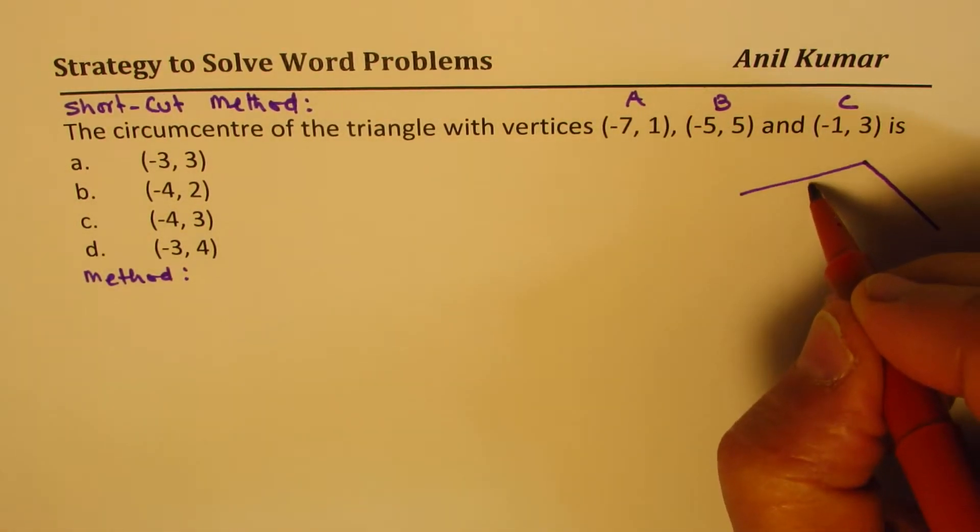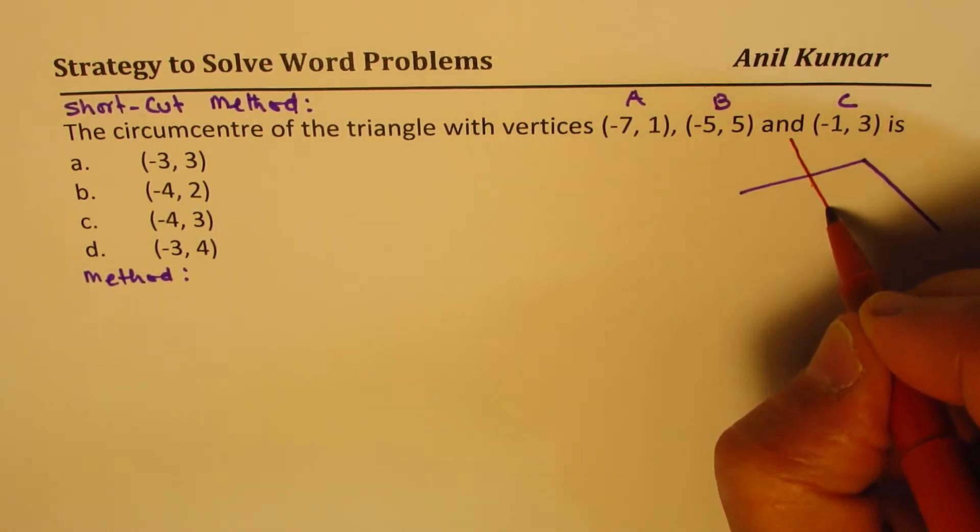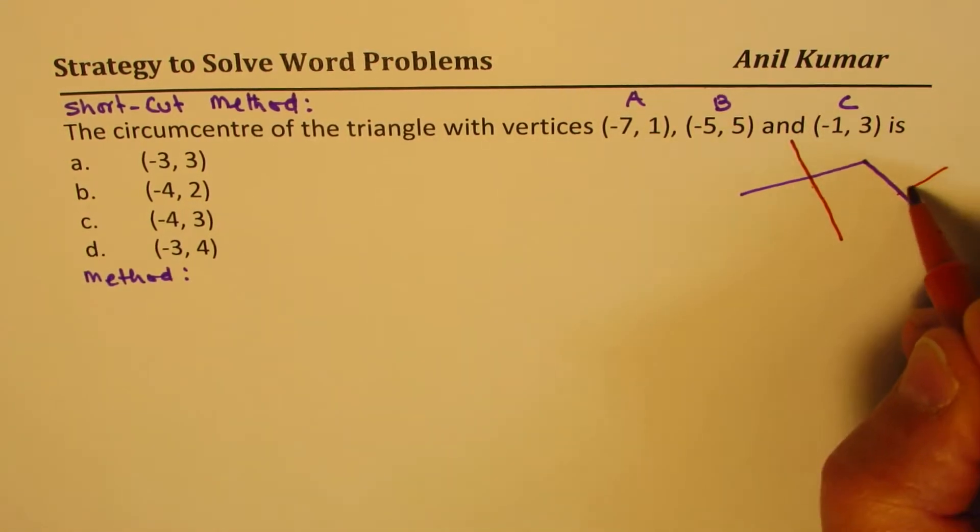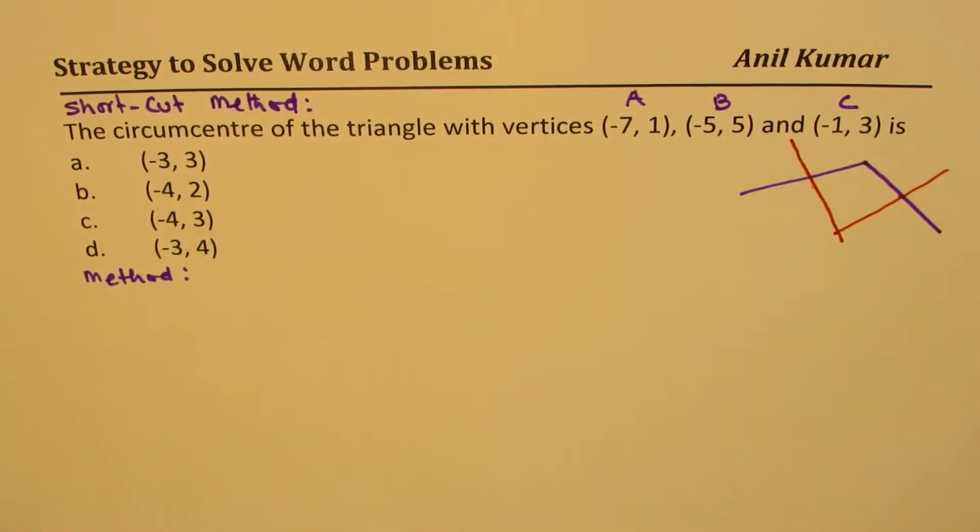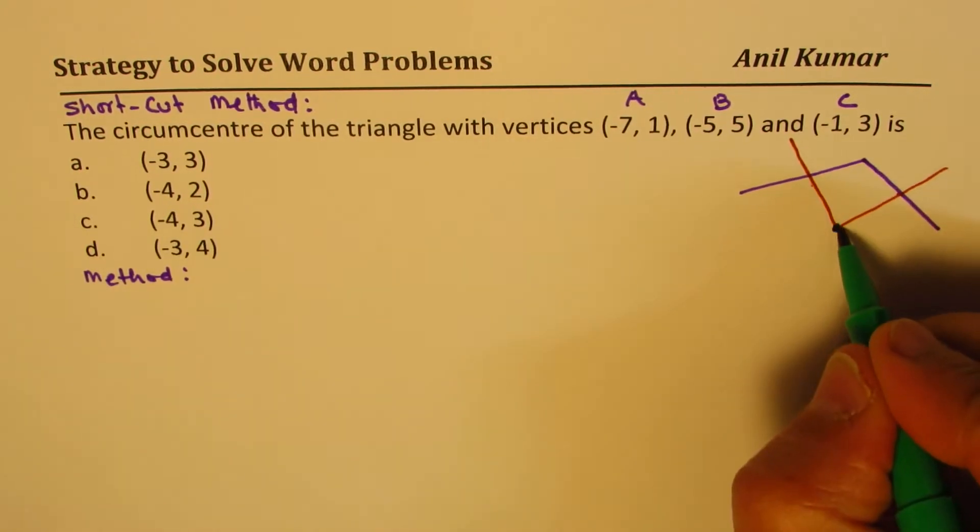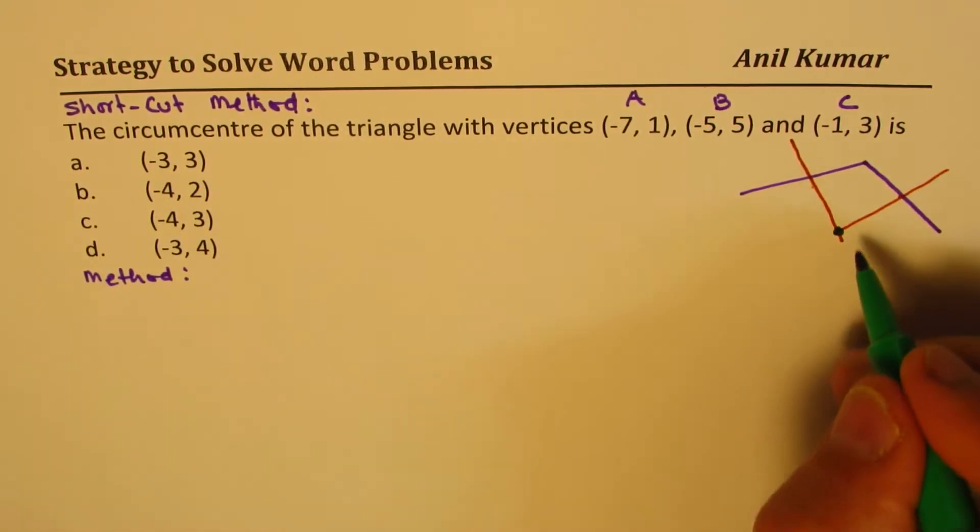The first step will be to find their right bisectors. So we have to find right bisectors. Wherever these right bisectors meet, that becomes the circumcenter.